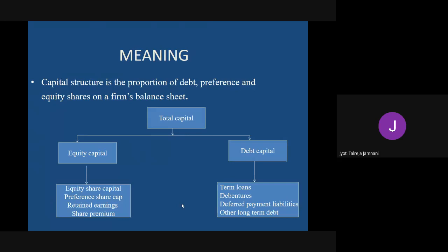Equity share capital is nothing but ordinary share capital. We call it ordinary share capital because people like you and me, who are ordinary and don't have their own businesses, want to invest a certain portion in some businesses and become owners or decision makers. We are called equity shareholders or ordinary shareholders.